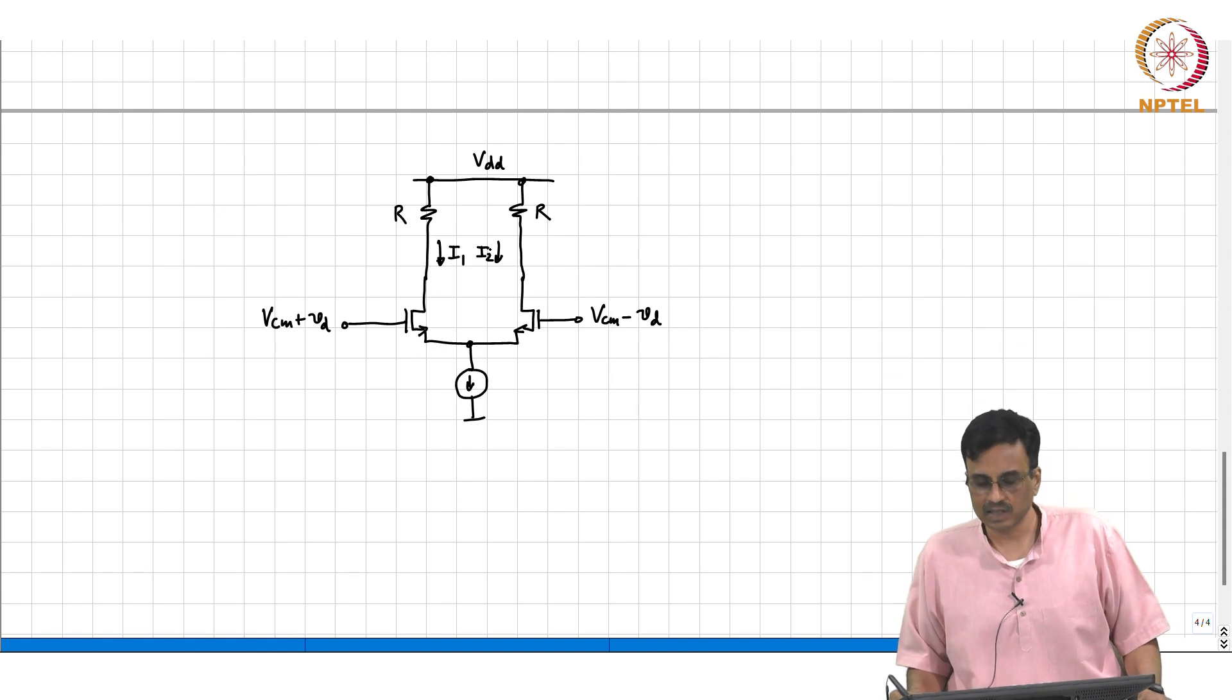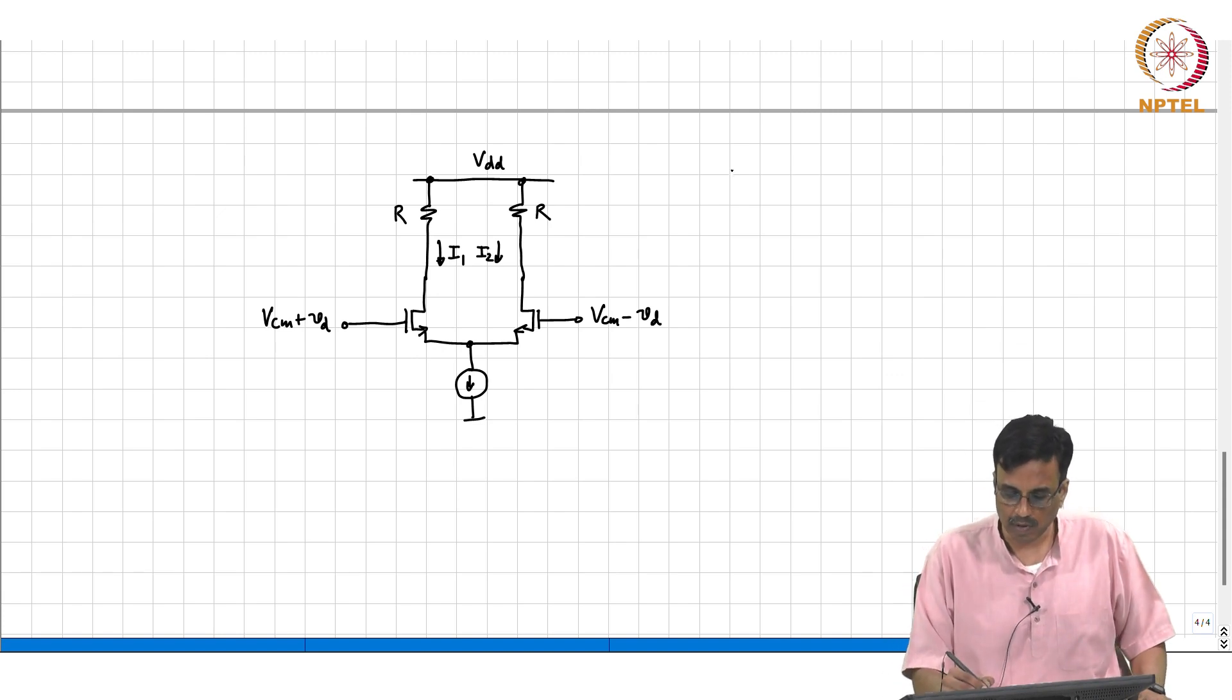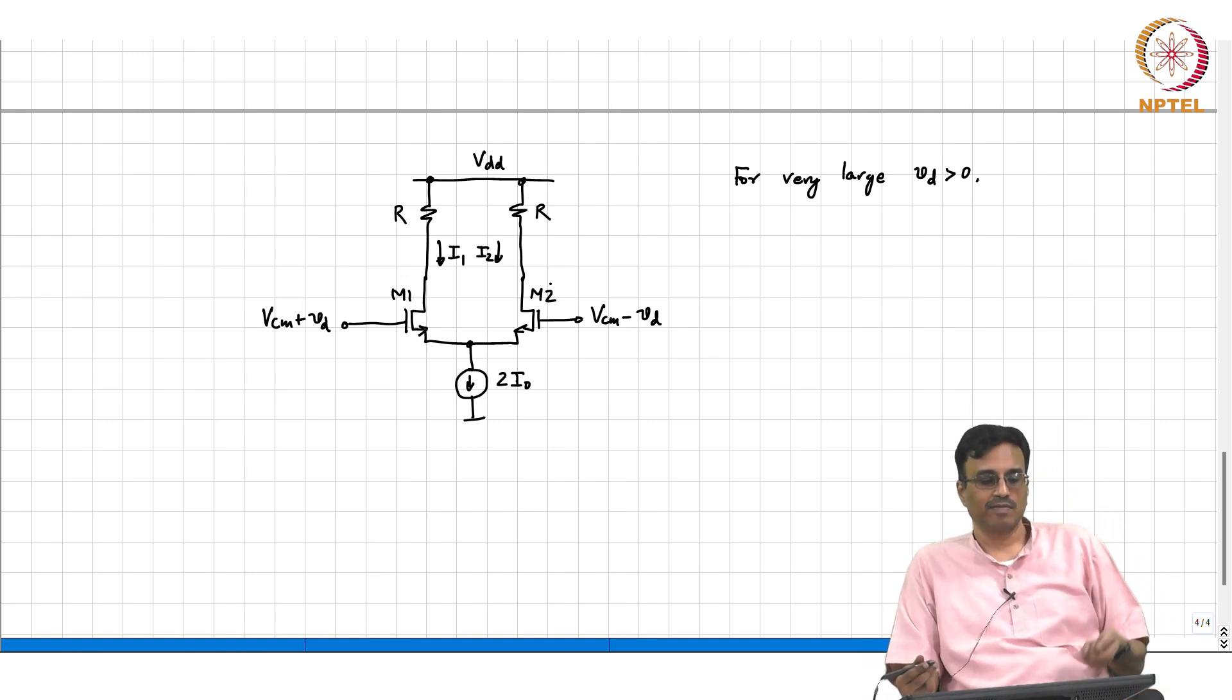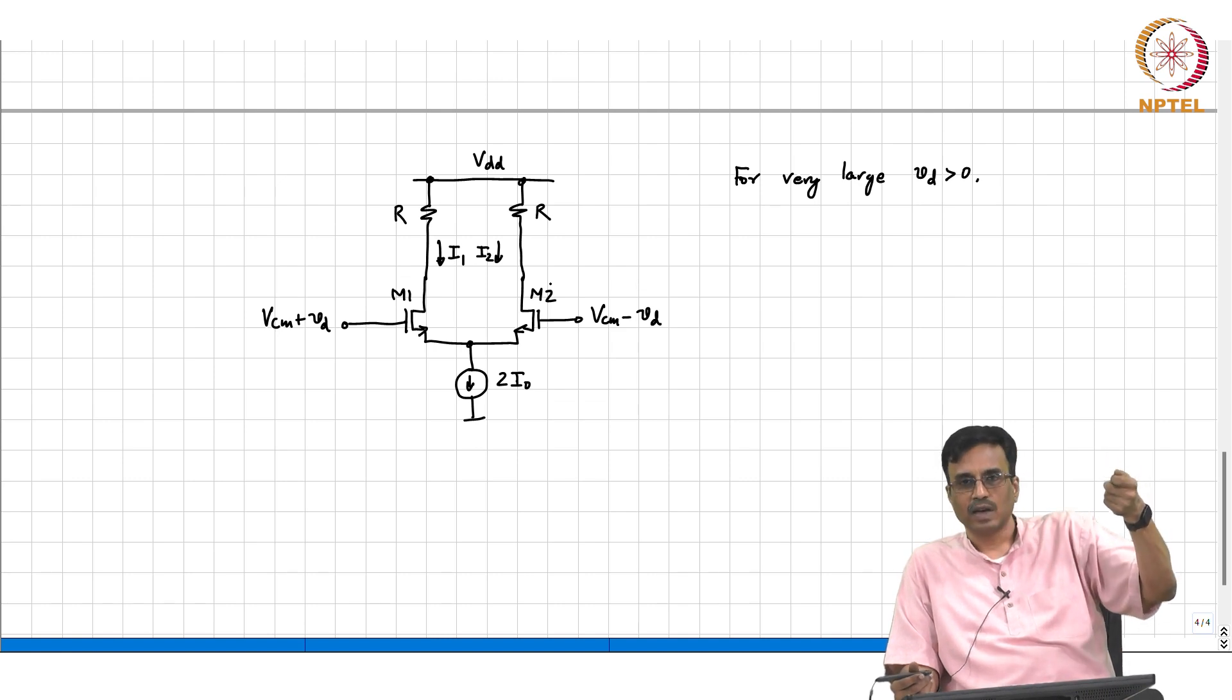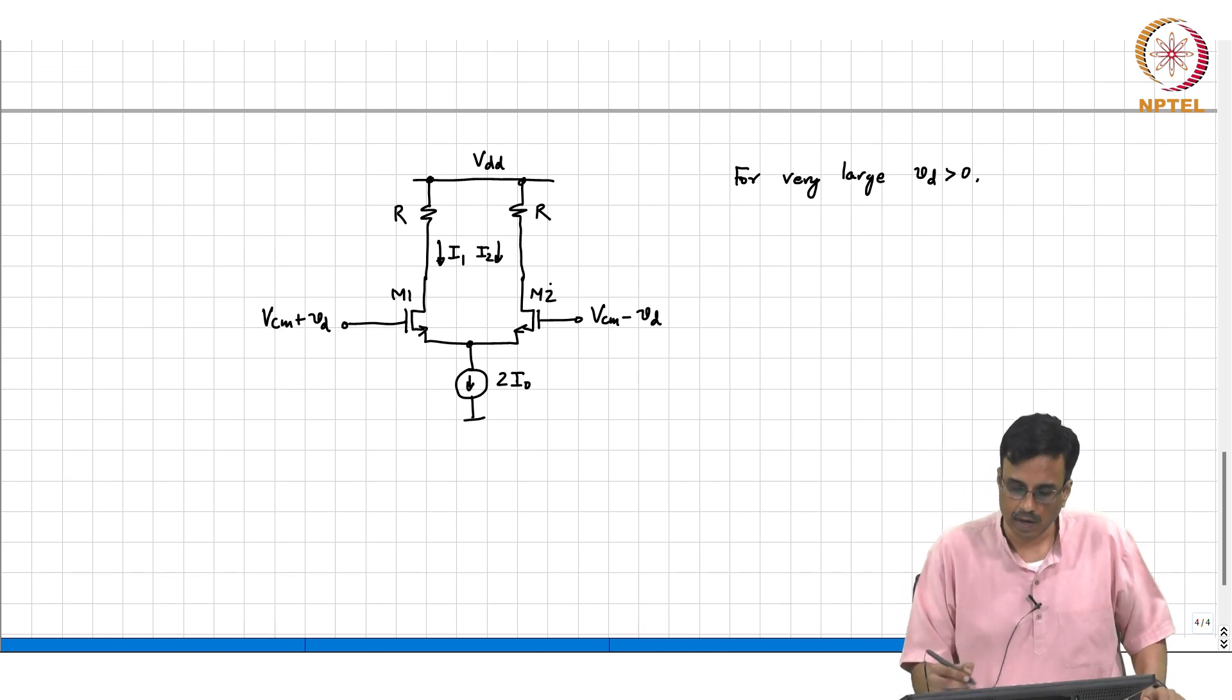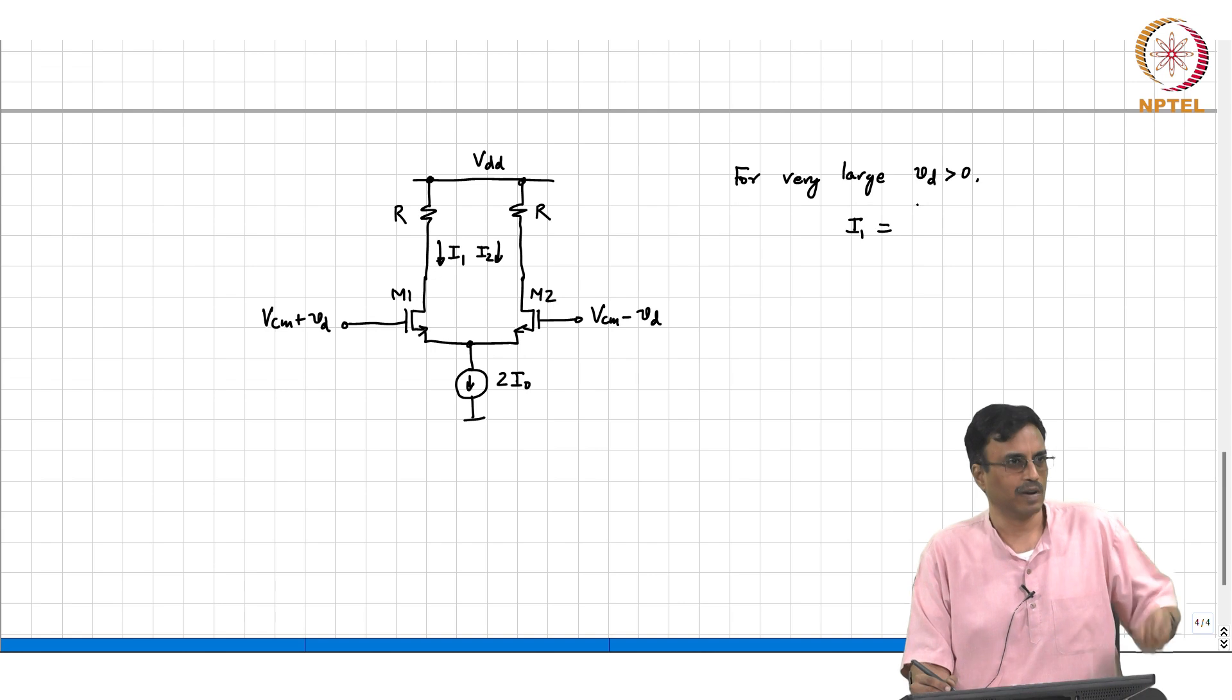The question is what happens to the currents I1 and I2 when Vd is not small. Before we get into the algebra, let's get our intuition straight. For very large positive Vd, what comment can you make about this current? If you go on increasing the gate of M1, M1 will steal more and more of that 2 I naught. I1 must be greater than I2, but if you go on increasing, what's the maximum I1 can be? 2 I naught.